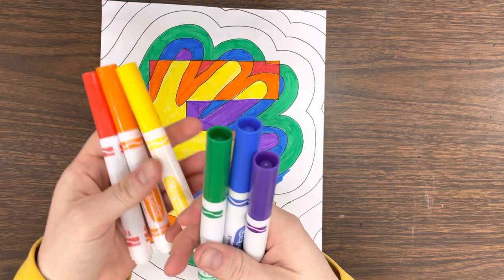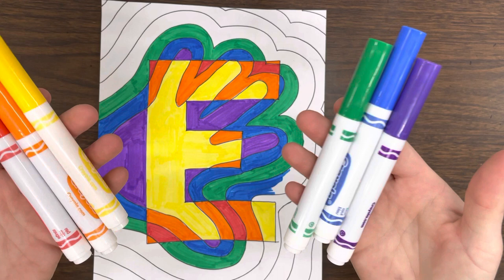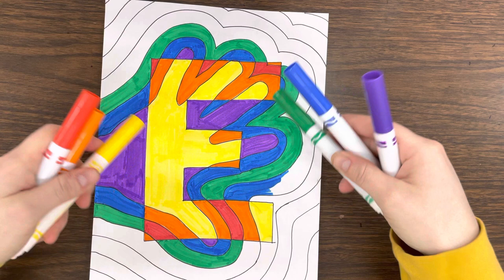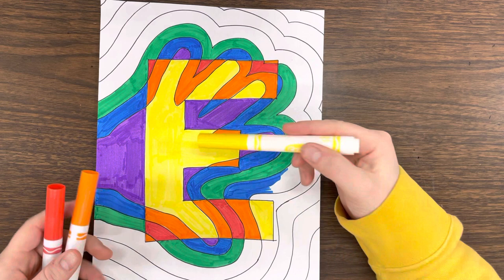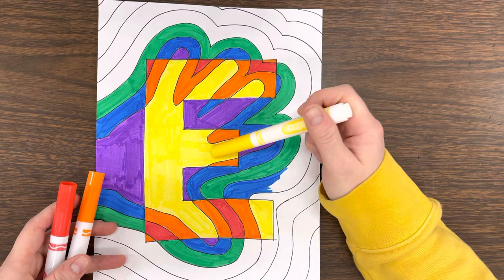When we are deciding what colors we're coloring our paper, we need to think about two things. Number one, when we're looking at this letter, as you can see, my letter is an E. I'm going to put these down because they're my cool colors. Now, with my warm colors, I started with the hand itself.